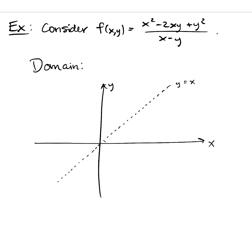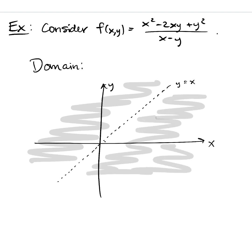So that line right there, that's the line y equals x, and any point on that line is not in the domain of the function. Now the rest of the function is fine at any other point. So all this out here, all this is the domain. You can plug in anything you want as long as it's not on y equals x.